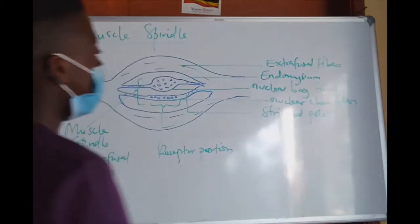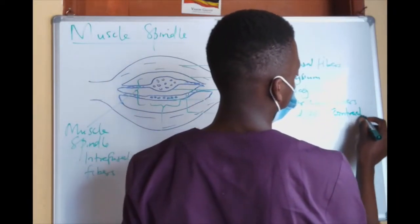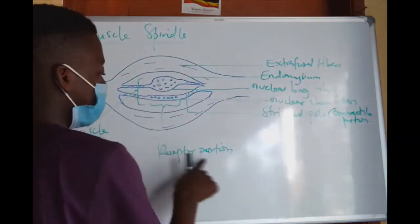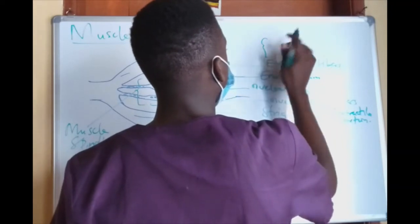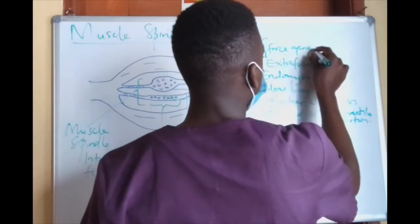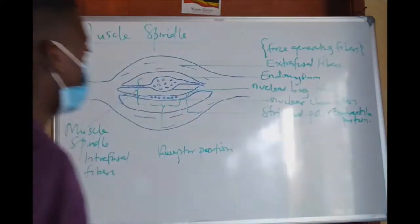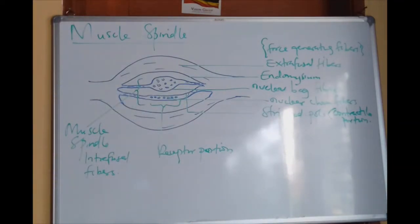These are extrafusal fibres. The striated portion forms the contractile portion of the muscle spindle, but it has a receptor portion which does not contract. The extrafusal fibres generate the movement force — they are called the force-generating fibres. The receptor portion is the intrafusal fibres, which we call the muscle spindle, and they are responsible for receiving information about changes in the muscle.